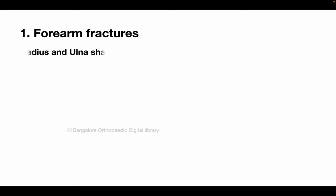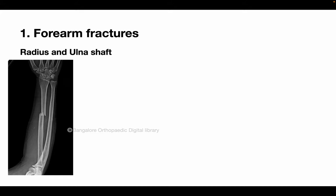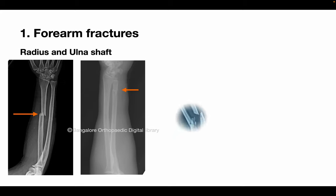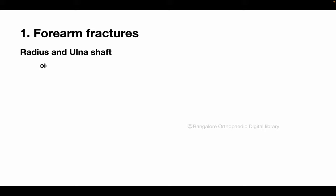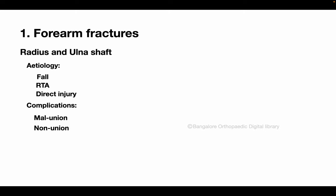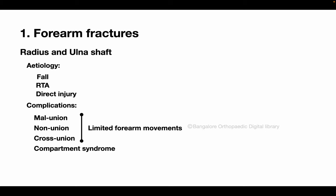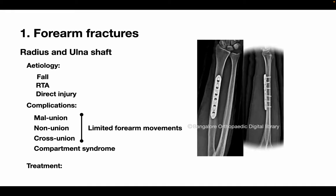Adult forearm bone fractures, either in isolation such as a radial shaft fracture or an ulnar shaft fracture, or a combination of both-bone fractures, are treated by open reduction internal fixation with plates and screws. The etiology of these fractures varies from fall to road traffic accident and direct injury. Specific complications include malunion, nonunion especially of the ulna, and cross union, all leading to limited forearm movements. When associated with significant soft tissue damage, compartment syndrome might also result.